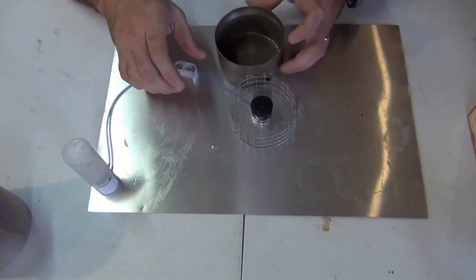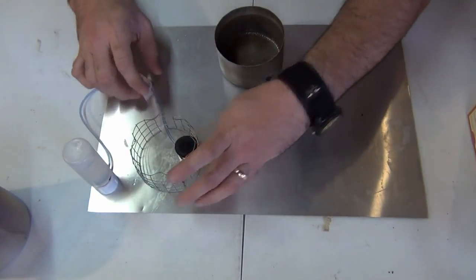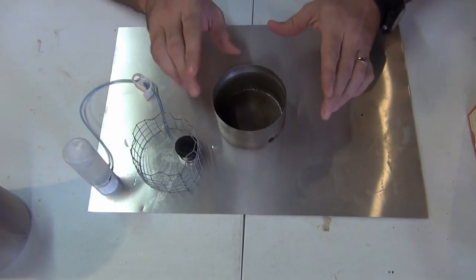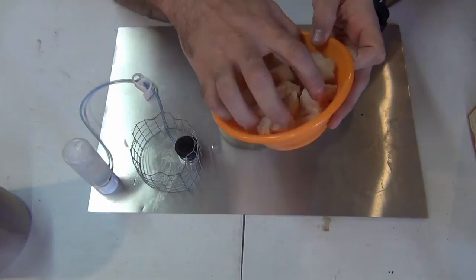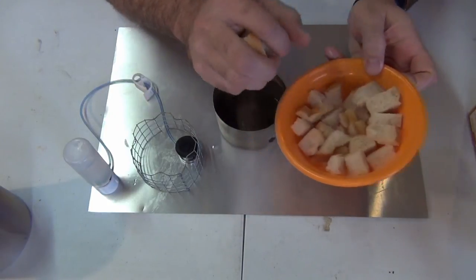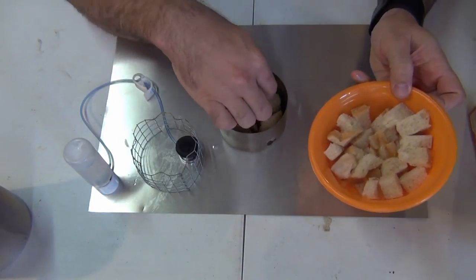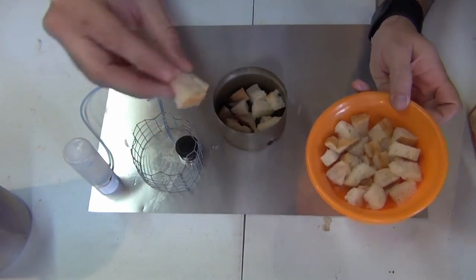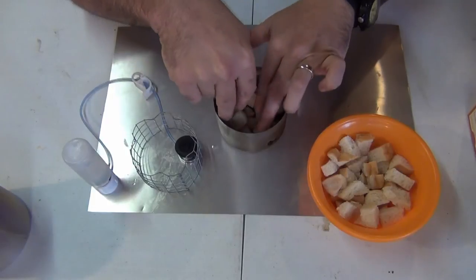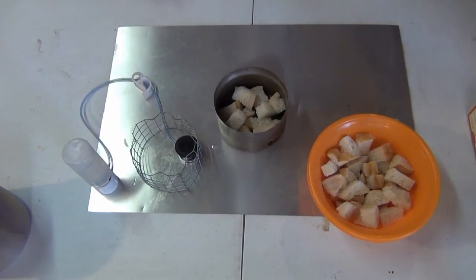So what we're going to do is we're going to set our stove out of the way just a second, put our cook pot here, and what we've got here is approximately two cups of French bread that we have sliced up in cubes. And what we're going to do is we're going to put that in there, stuff it in just a little bit.